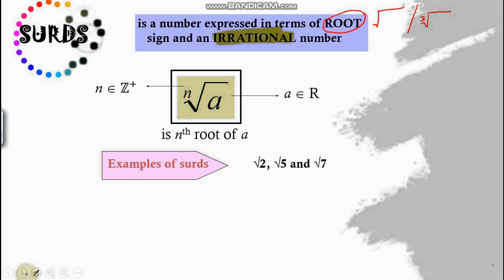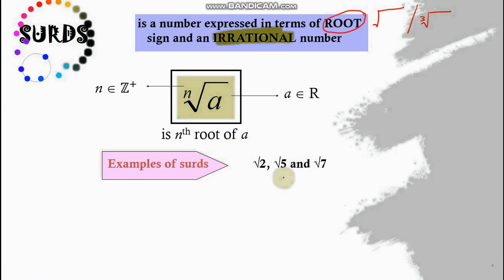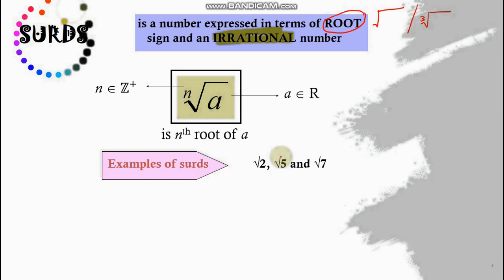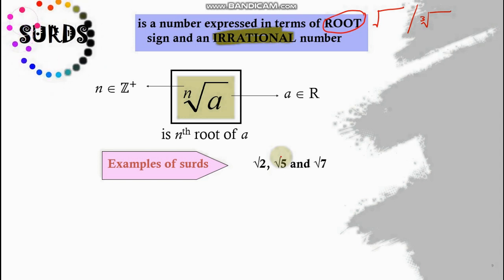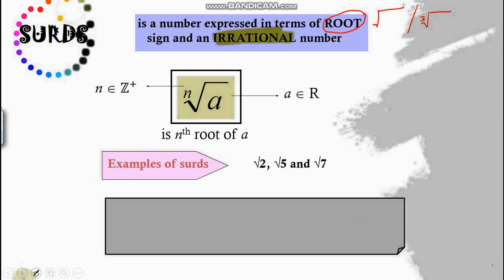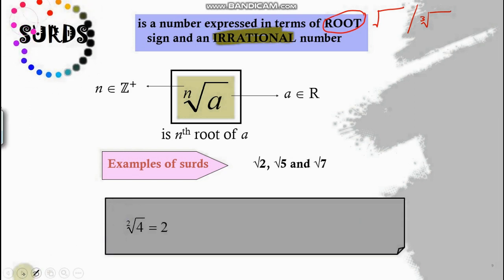Examples of surds survive as surds because when you insert these values into your calculator, the decimal does not terminate or repeat with the same pattern — that's why we call them surds. But let's crack your brain a bit: what happens if you have square root of 4? It's actually 2.